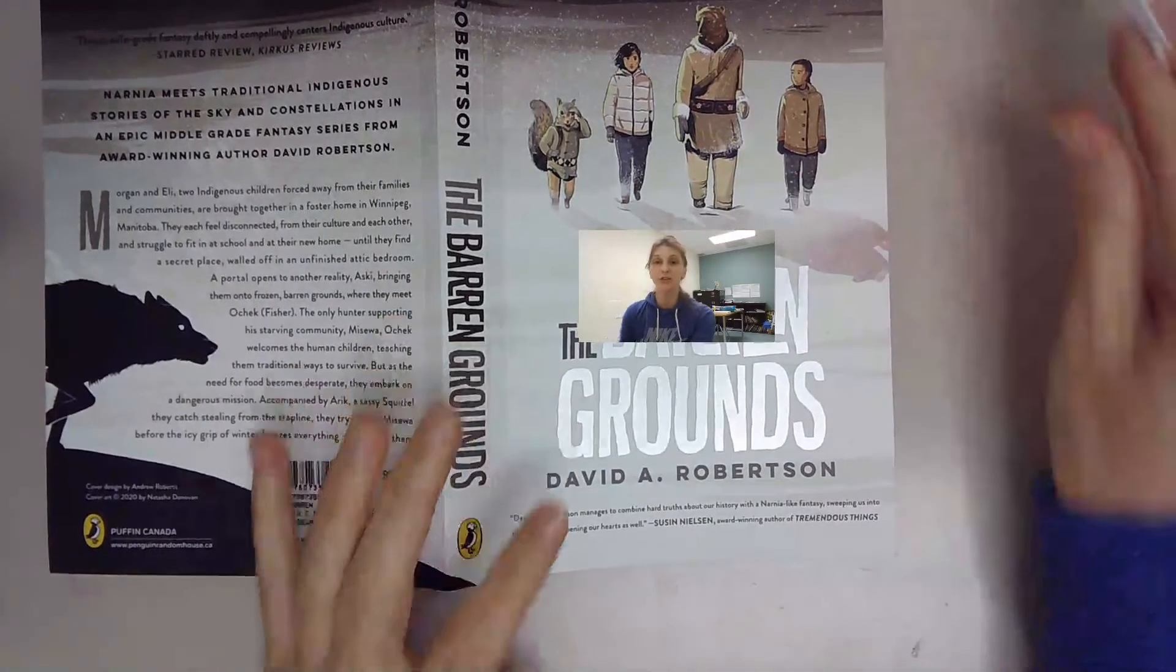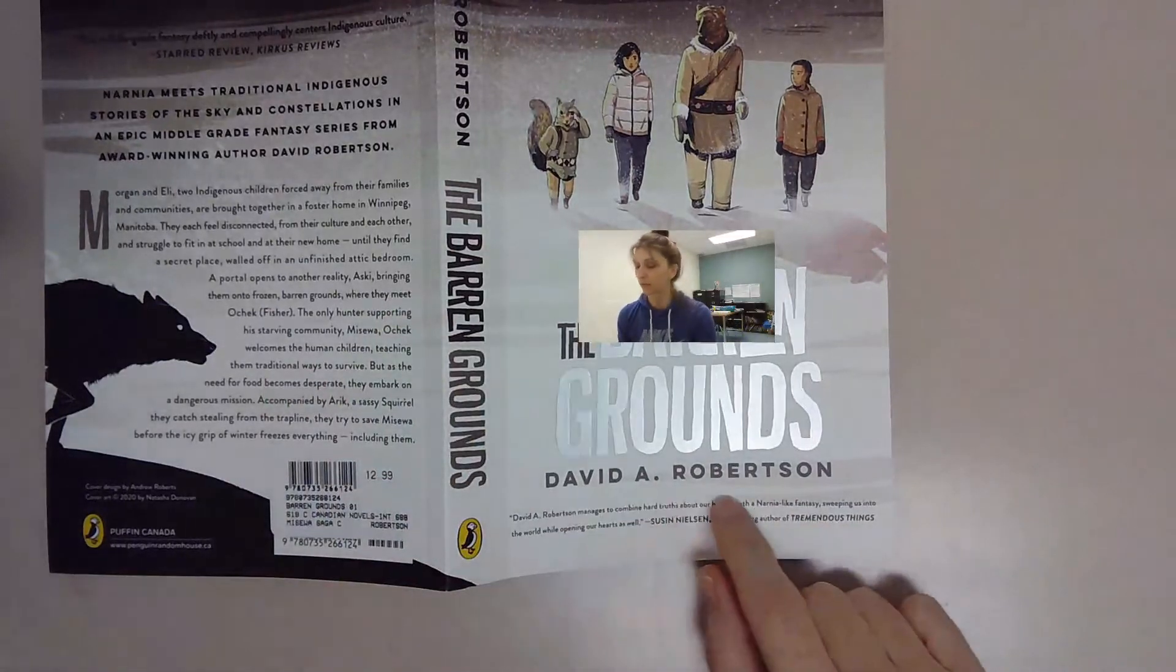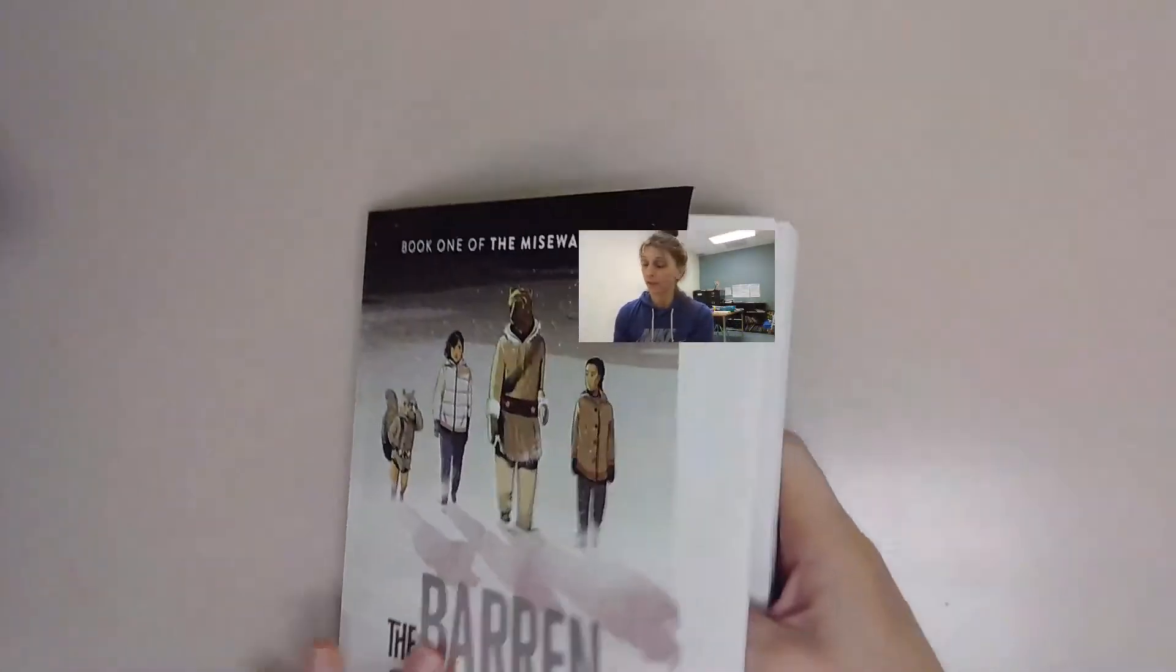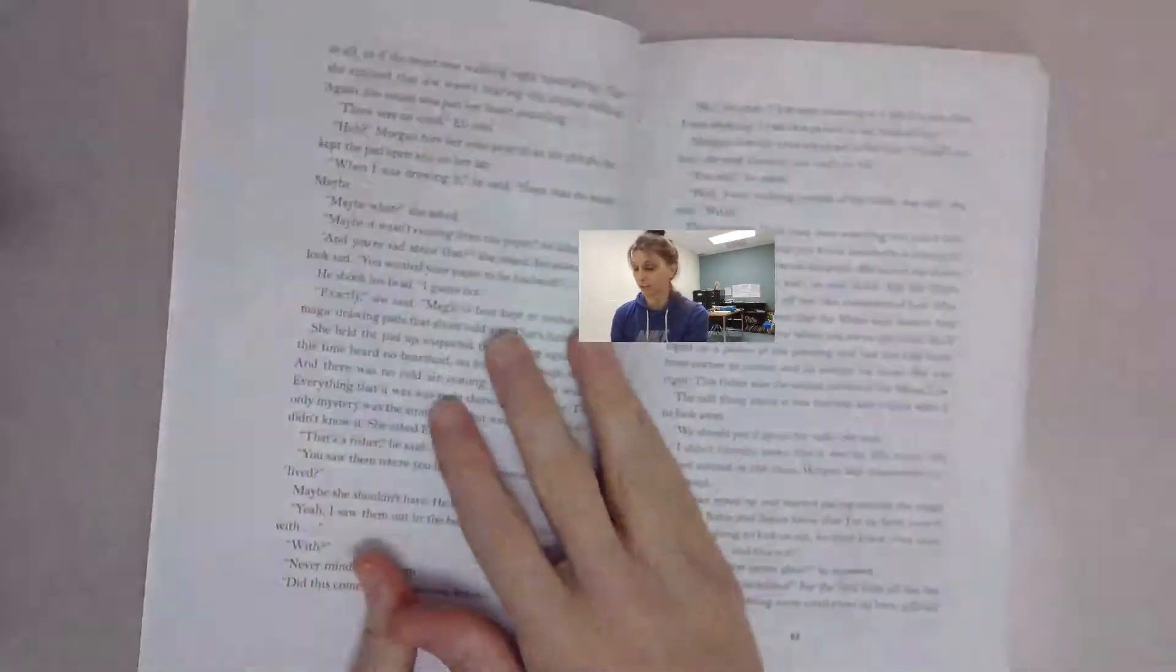Hi guys, welcome back to The Barren Grounds by David A. Robertson. We're on Chapter 7. This is Part 3 of Chapter 7.